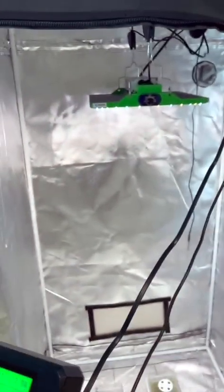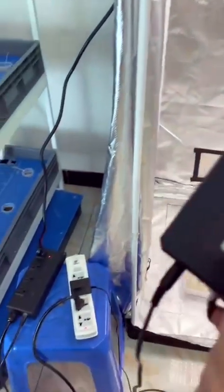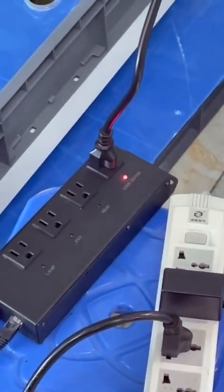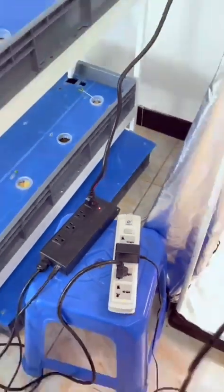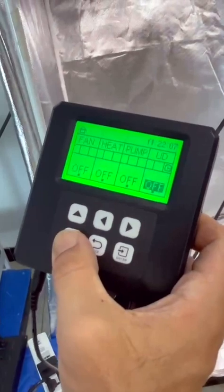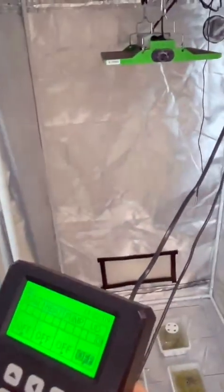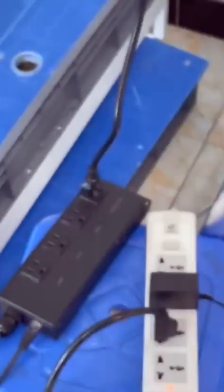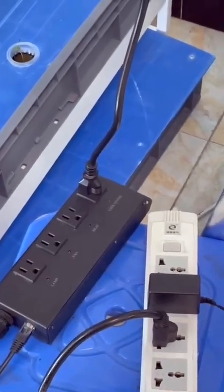You can see that when we open the power strip, the light is turned on. We now control the light by controlling the power strip. When we change it to off state, the light will be turned off.